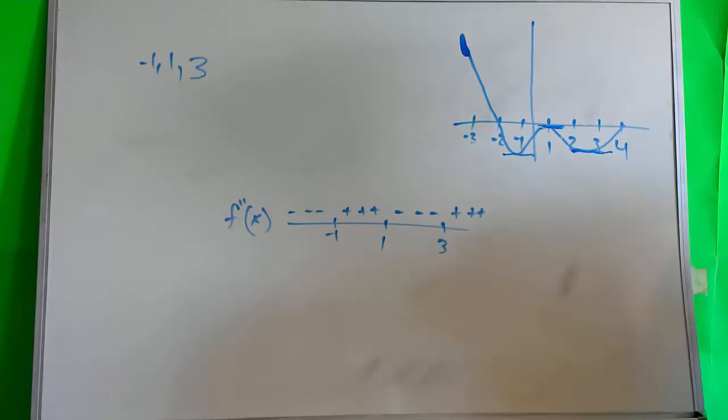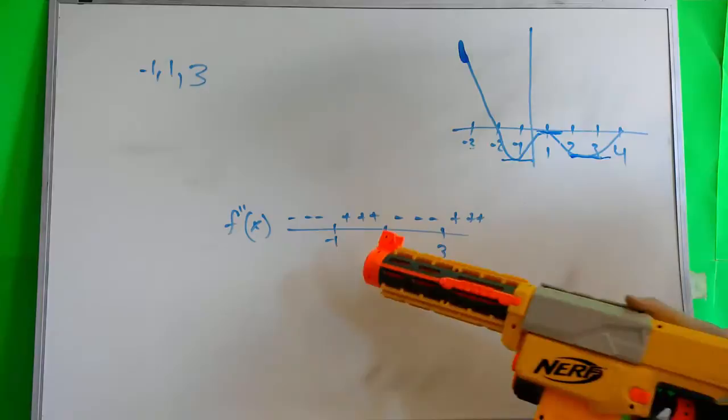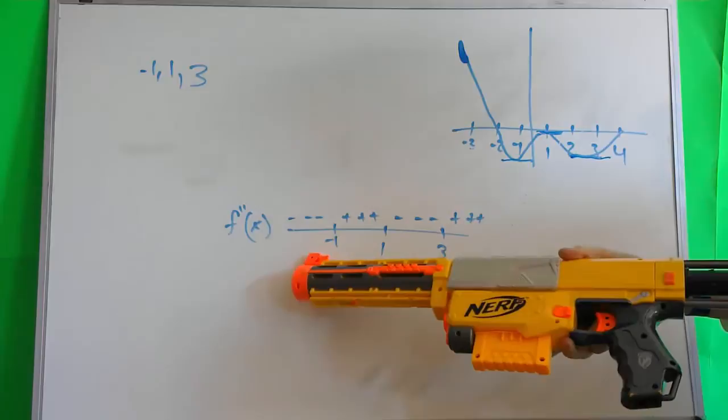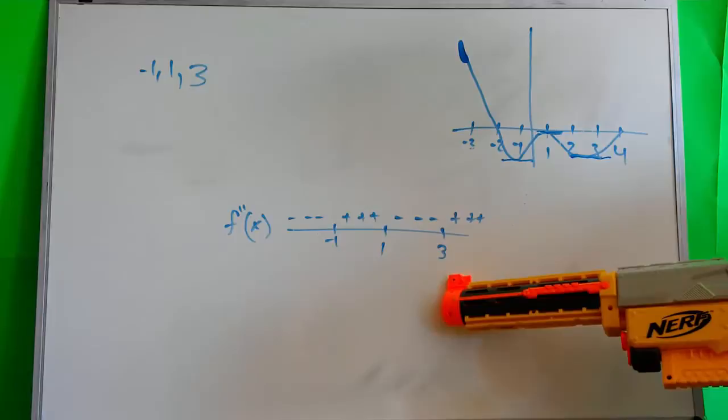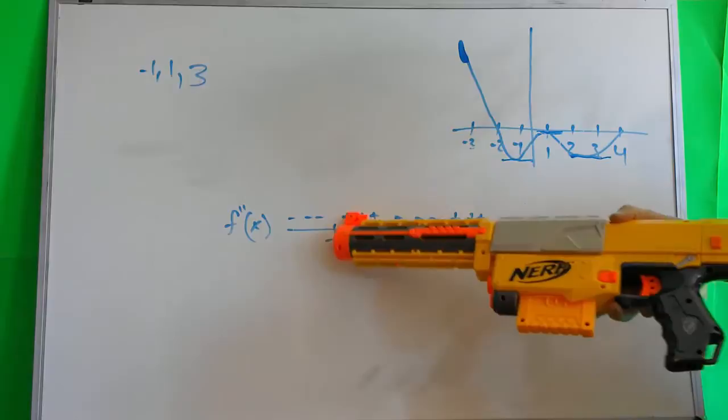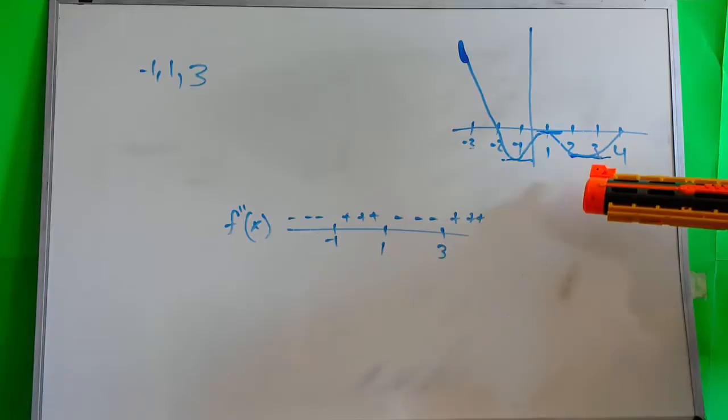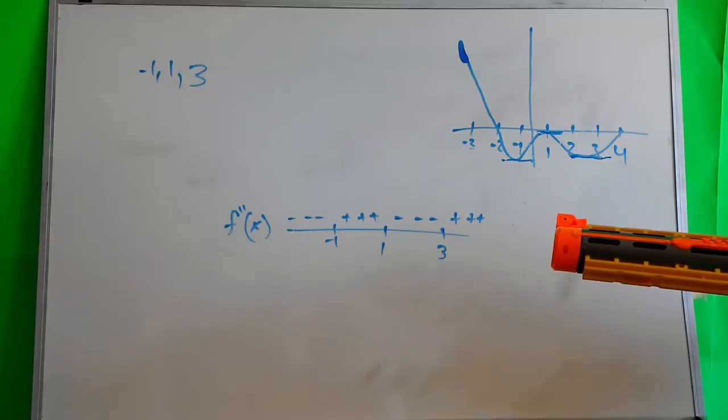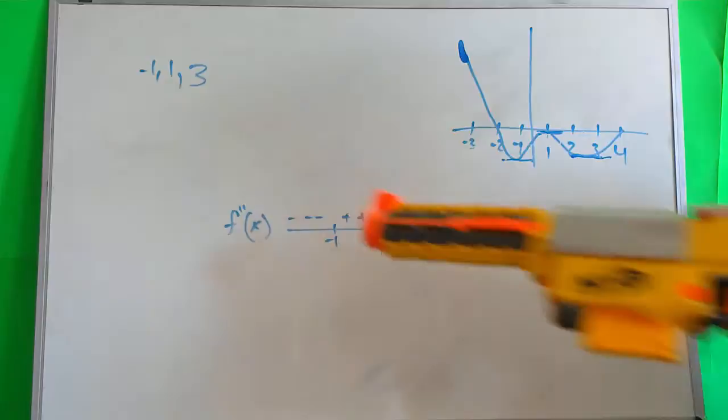So, knowing that, we then go back to our handy number line here of the graph of the second derivative. And we can see that, at points negative 1, 1, and 3, the slope changes from negative to positive. And this, coupled with the zero slopes on the graph, we can then conclude that the points of inflection for this graph would indeed be at negative 1, 1, and 3.